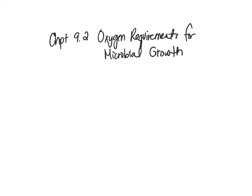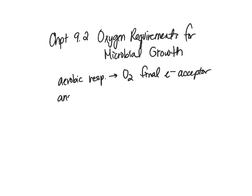We've spoken about aerobic respiration and anaerobic respiration. Aerobic respiration is when we use oxygen as the final electron acceptor. Anaerobic respiration is when we have something other than oxygen — another inorganic molecule — as the final electron acceptor.